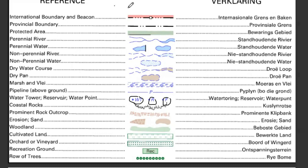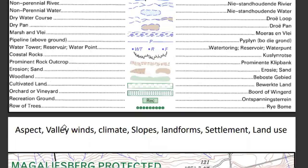In map work, every symbol and everything you see has value. You must be in a position to interpret it. Before proceeding with geomorphology, climatology, settlement, or economic geography applications, start by understanding what each symbol means on the mapped area, so you can identify what each feature represents.